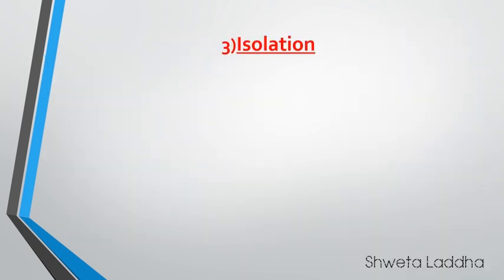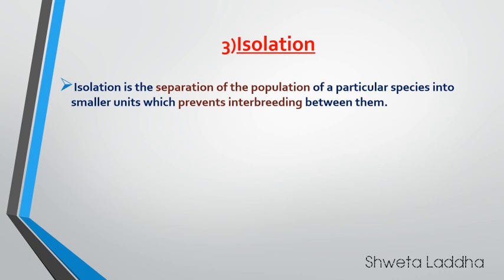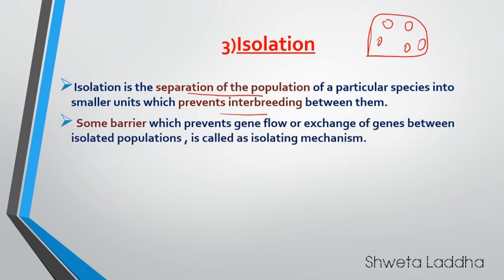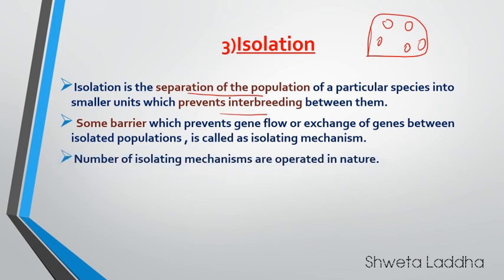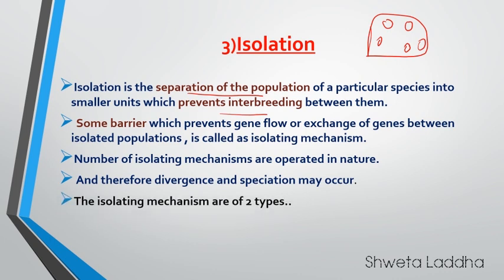Let us start with the last and third concept — isolation. What is isolation? Isolation means separation of a population from a particular species into small units. Populations are isolated from one another and there is no interbreeding among them. This isolation leads to prevention of interbreeding and it may lead to evolution. There might be barriers which prevent gene flow or exchange of genes between isolated populations — called isolating mechanisms. These mechanisms result in divergence and speciation.